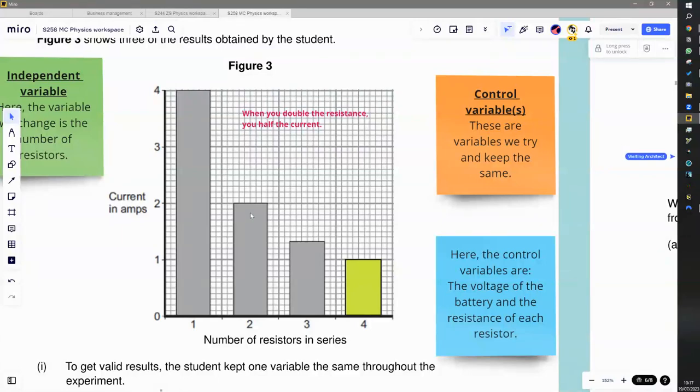What I've done is I've doubled the resistance. It was one resistor, now it's two resistors. Because they're in series and they're identical resistors, this one has twice as much resistance as this one. When it has twice as much resistance, the current is half.